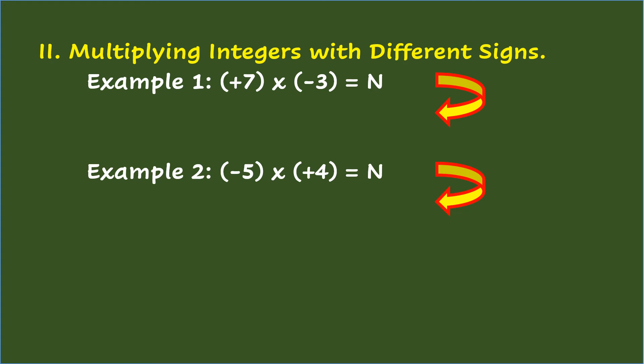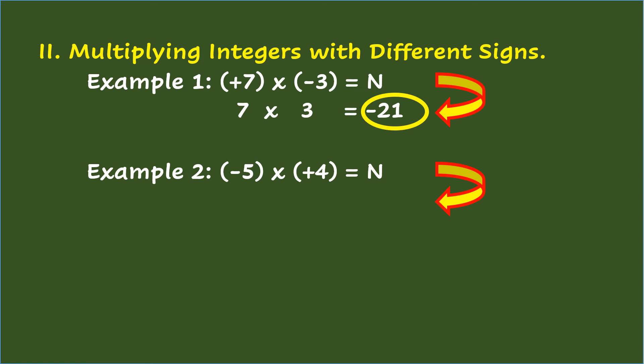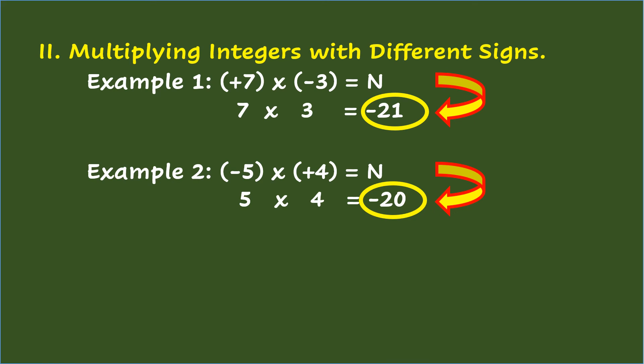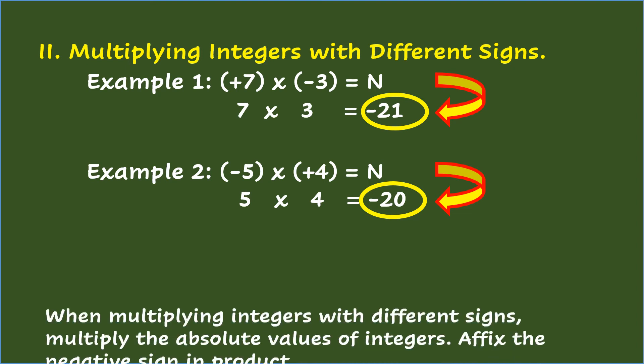Multiplying integers with different signs. Example 1: Positive 7 times negative 3 equals n. Just multiply the absolute values: 7 times 3 is 21. Then affix the negative sign in the product. So positive 7 times negative 3 equals negative 21. Example 2: Negative 5 times positive 4 equals n. Multiply the absolute values: 5 times 4 equals 20. Then affix the negative sign. So negative 5 times positive 4 equals negative 20. When multiplying integers with different signs, multiply the absolute values and affix the negative sign in the product.